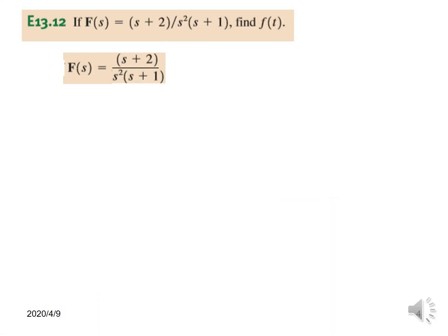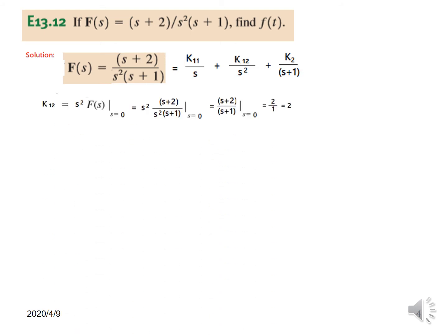For problem 13.12, F(s) has an s² term and an (s+1) term. That means two terms for s² and one for (s+1), giving three terms total: k11 over s, k12 over s², and k2 over (s+1). We find k12 first by multiplying by s² and substituting F(s). Simplifying and setting s=0, we get 2 over 1, so k12=2.